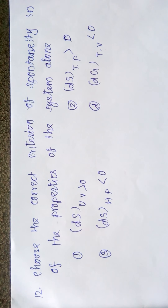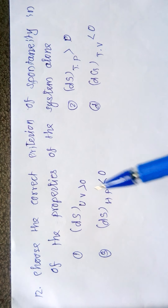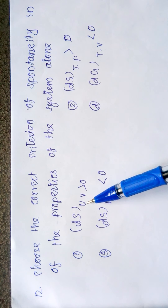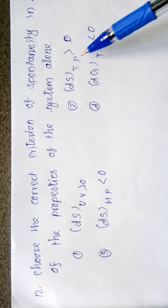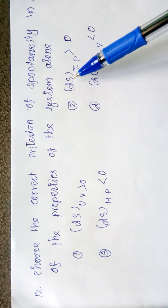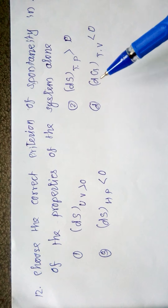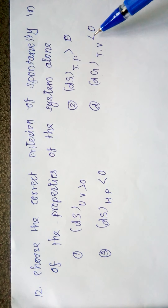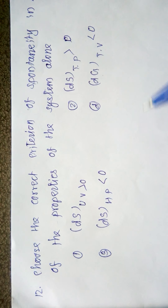Choosing the correct criteria of spontaneity in terms of system properties: ΔS at constant U and V > 0 is correct for a spontaneous process — entropy must always increase at constant internal energy and volume. ΔG at constant T and P < 0 is spontaneous; ΔG at constant T and V < 0 is wrong (it should be constant T and P). So ΔS_UV > 0 is the right option.